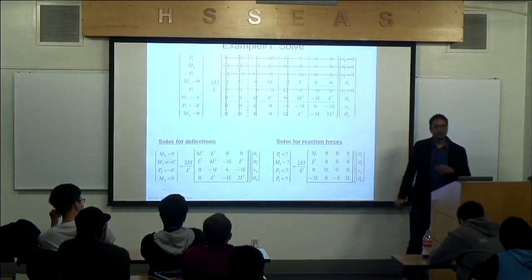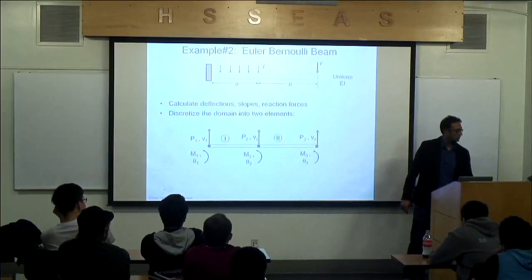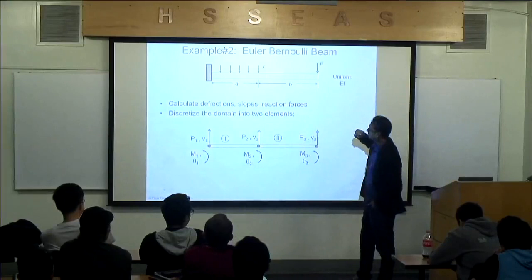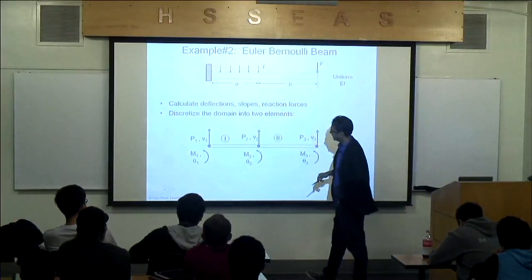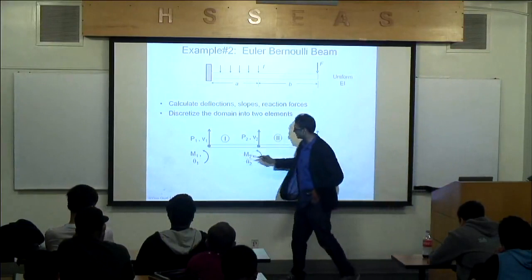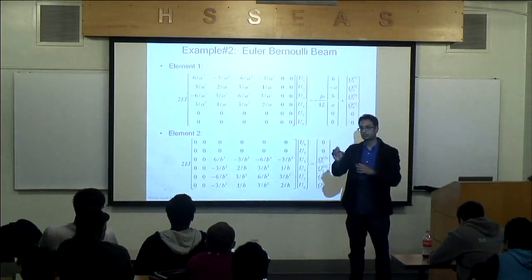A second example: a distributed force acting over part of the beam, length A, and a downward force F at the free end over length B. I divide into two logical elements — element 1 of length A, element 2 of length B — with nodes 1, 2, 3. That gives six degrees of freedom and a 6×6 global matrix.